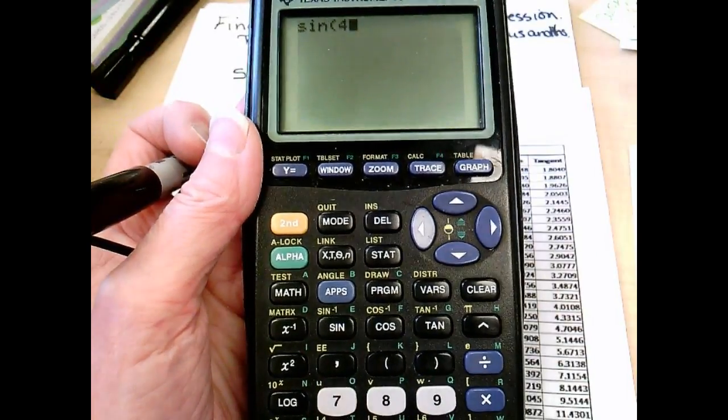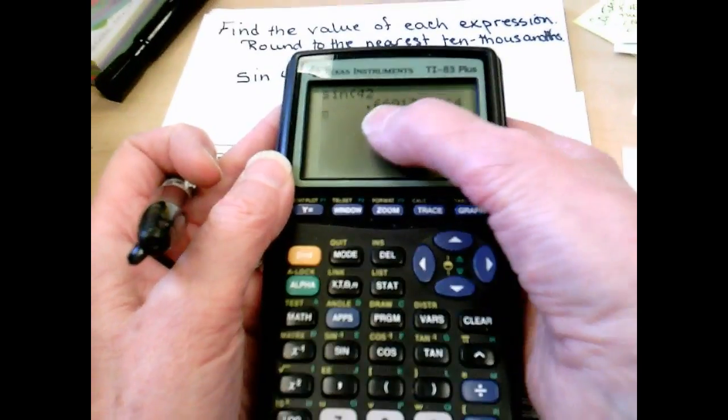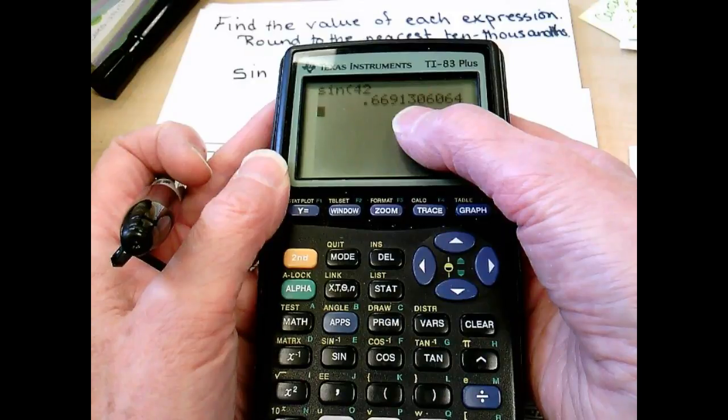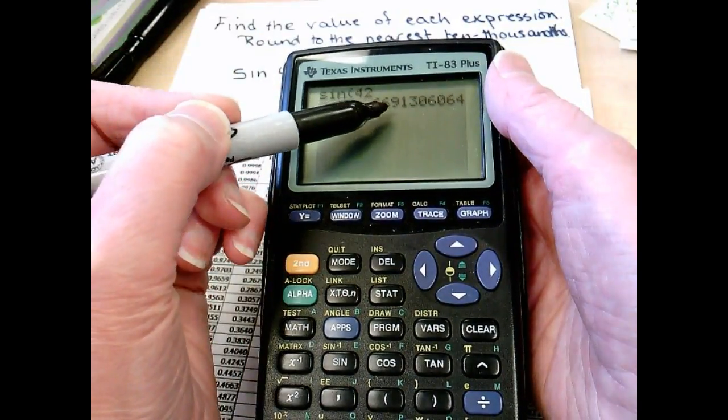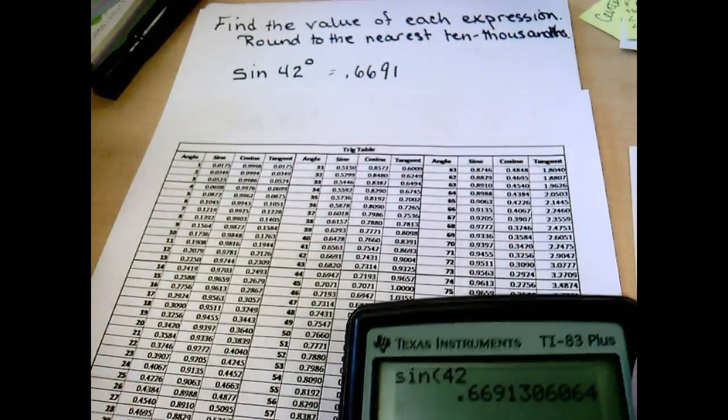So we go sine 42, enter. And it gives me the same exact number, 0.66913, ten thousandths. So we go tenths, hundredths, thousandths, ten thousandths, and we have the 0.6691.